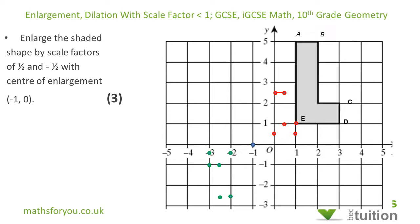Starting from A — with reference to the center of enlargement, to go from the center of enlargement to A I move 2 to the right and 5 up. Because the scale factor is one half, I'm going to move 1 to the right and 2 and a half up. So that's point A prime.